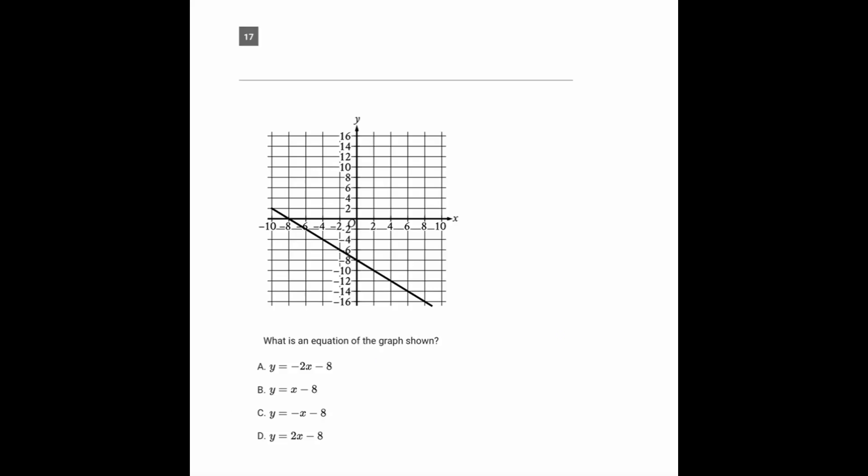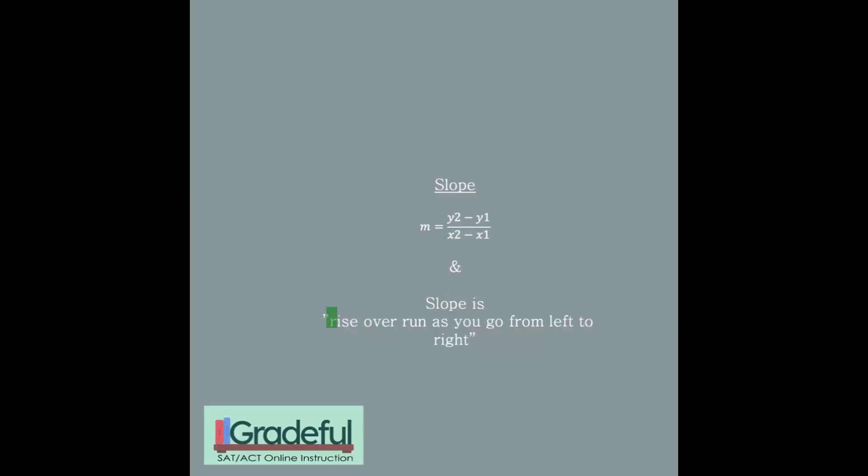Now going to question 17. Here we have the equation of the line already graphed for us, so we can get the slope as rise over run as you go from left to right.